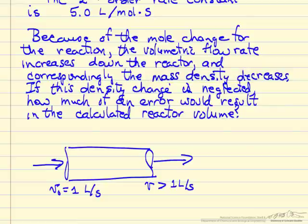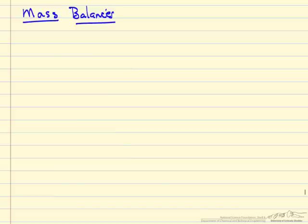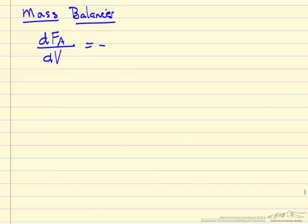What we're going to do is model this two ways. We're going to neglect this density change and calculate the size of the reactor, and then we're going to do the correct complete calculation and compare the reactor volumes. We'll start by writing down the mass balances for a plug flow reactor — the change in the molar flow rate of A as a function of cumulative volume down the reactor. There's a negative sign because A is reacting away; its molar flow rate decreases. It's a second order reaction.